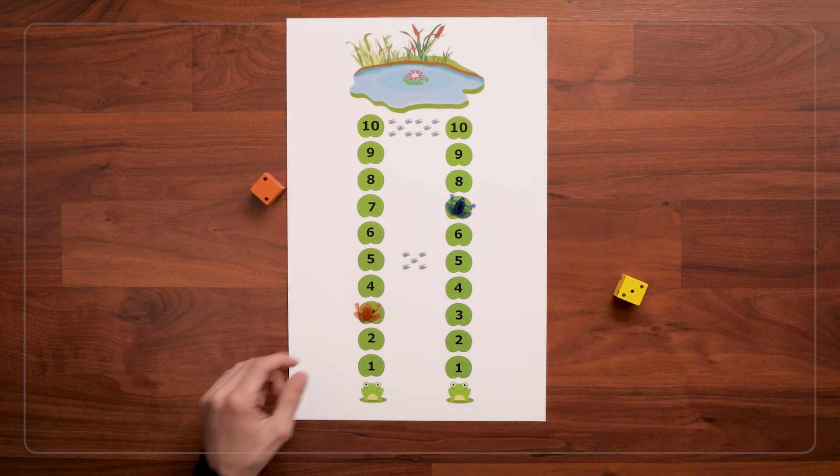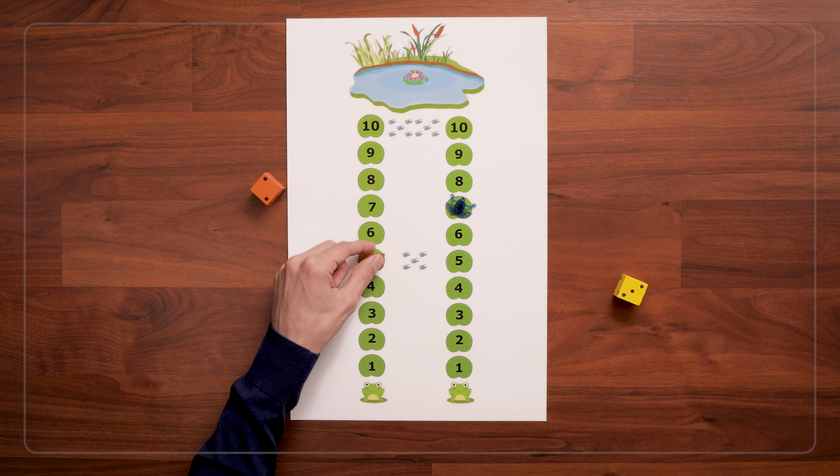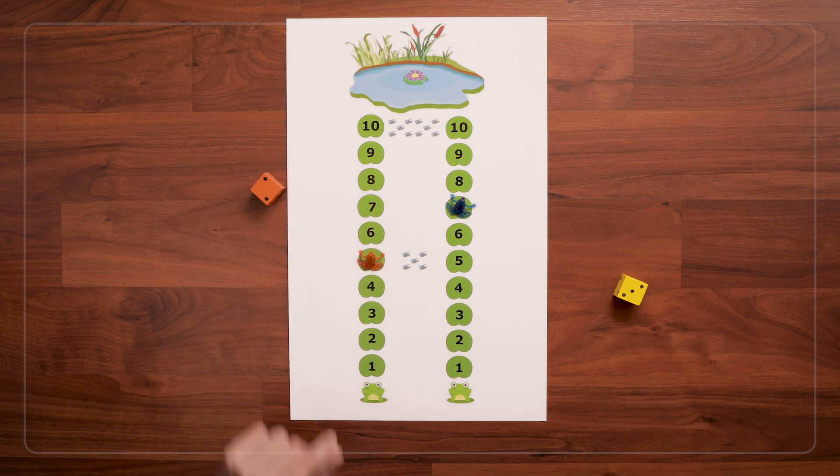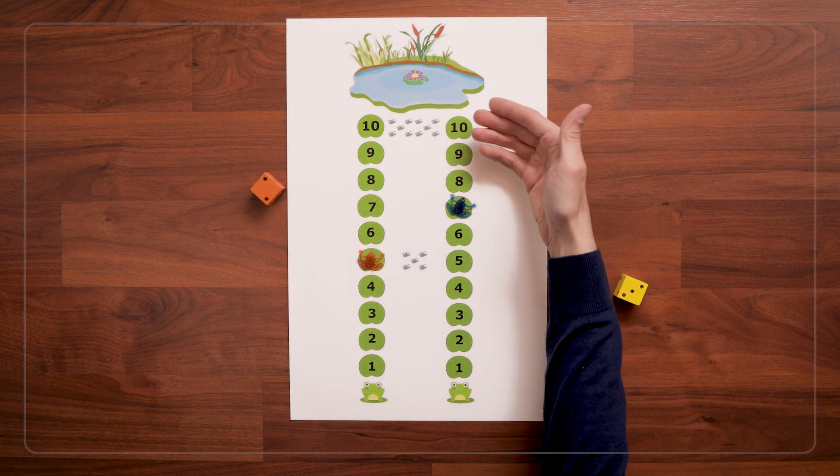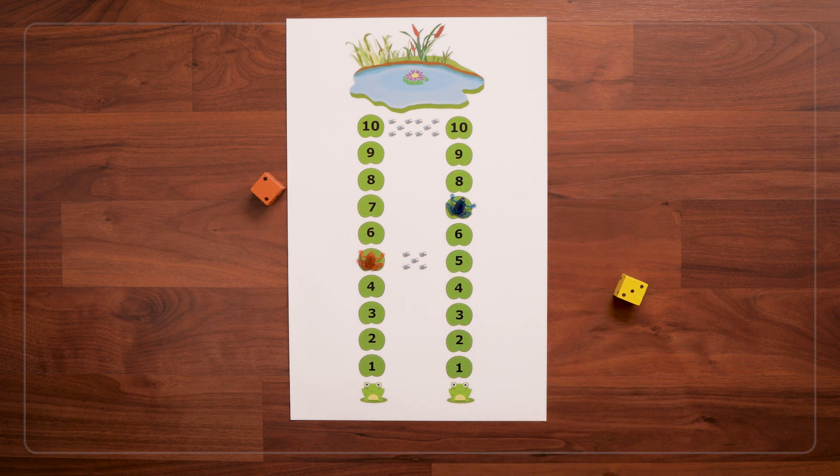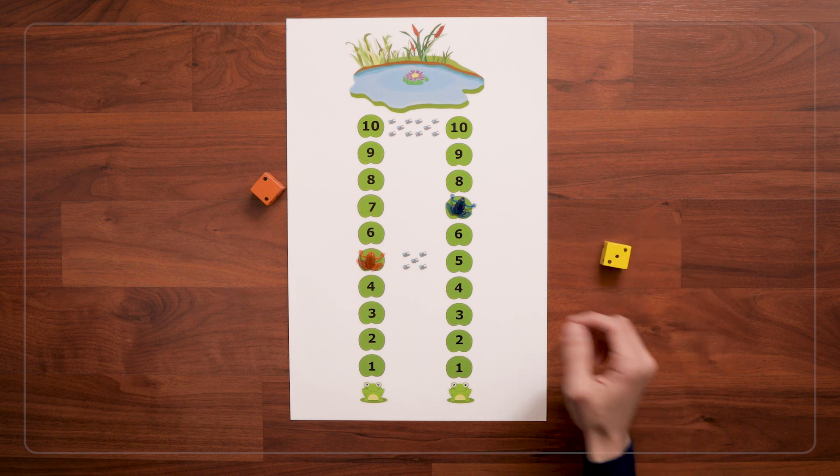And while you play, you can ask questions like, How many more hops will it take for us to get to the pond? Or, So what number do you want to roll? Do you want to roll a 1 or a 3? Why? And helping them see that a 3 would get them closer to the pond.